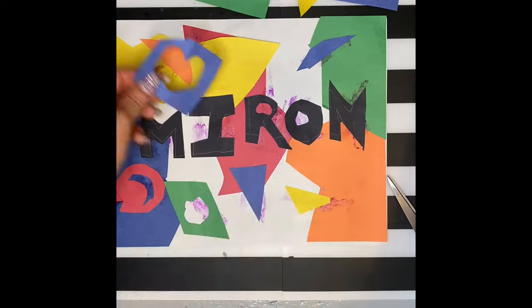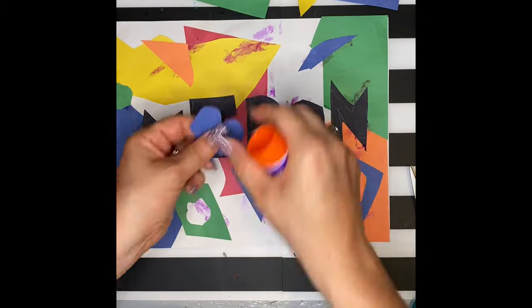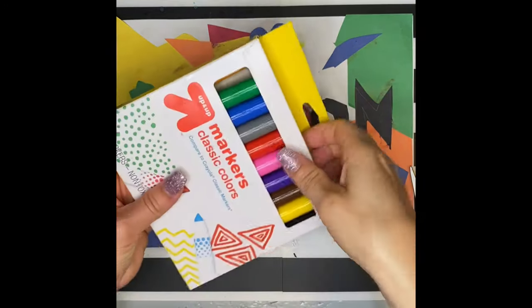Sometimes your shapes create what's called a positive and negative effect. Positive shape is the shape you cut out. The negative is the paper left behind. Both of those can be used.